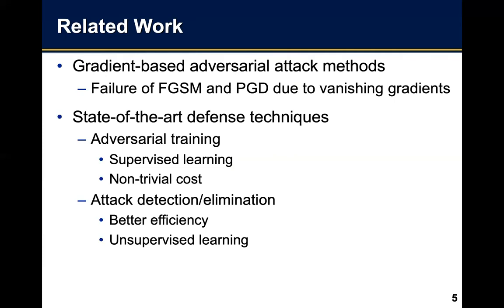Recently, gradient-based adversarial technologies such as the fast gradient sign method and projected gradient descent technologies have shown strength in producing effective adversarial examples in image data. This method computes the gradient of the loss function of a target model to identify weak input features to attack. However, a recent work reports that gradient-based adversarial attack methods tend to fail to produce effective adversarial perturbations when faced with vanishing gradients due to poor backward signal propagation in neural networks.